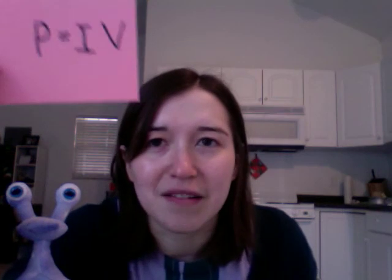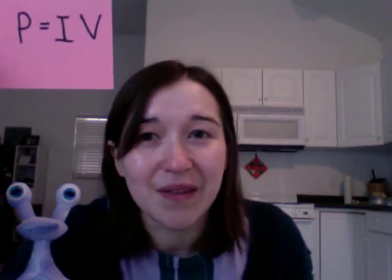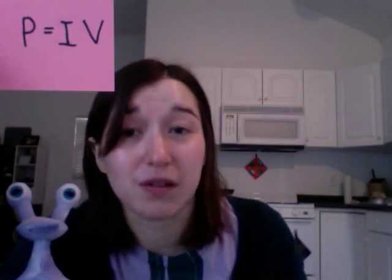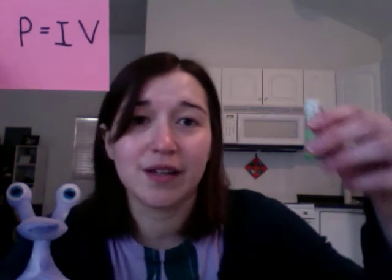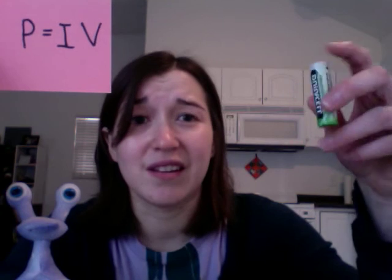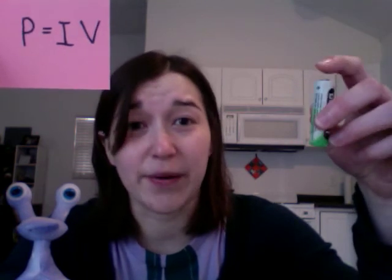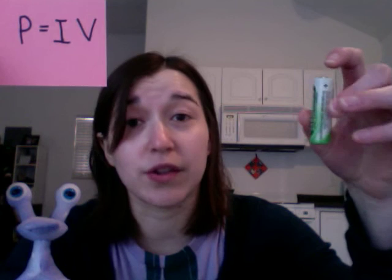Just to review electric power quickly in engineering terms, we have P equals IV, which is the current going through something times the voltage across it. So this battery, just hanging out, there's no current going through it, and therefore it's not providing any power. But there is a voltage across it, so there's a potential.